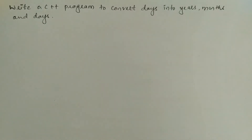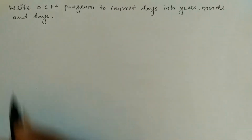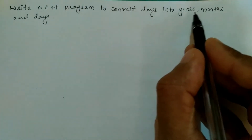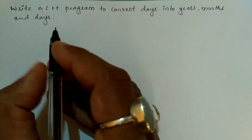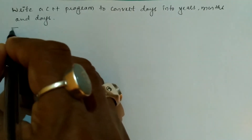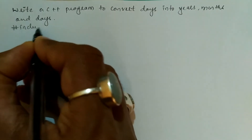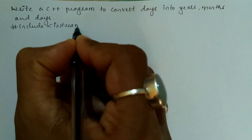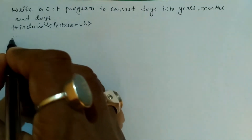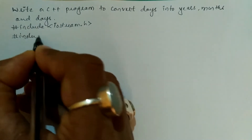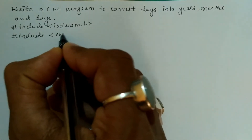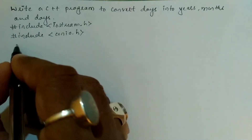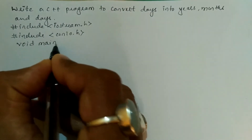Hello and welcome to Vision Academy. My name is Hanuman Ladwa and in this video we are going to write a C++ program to convert days into years, months, and days. We will write the preprocessor directives: hash include with iostream.h header file, and the next preprocessor directive is hash include with conio.h header file.